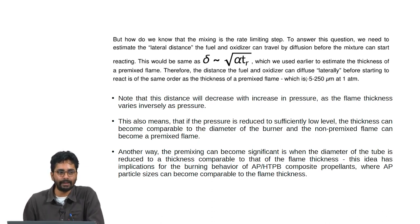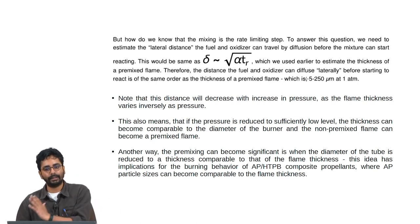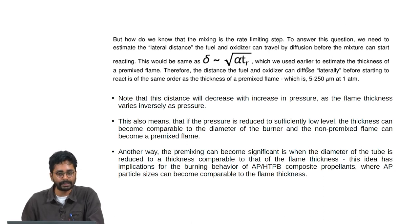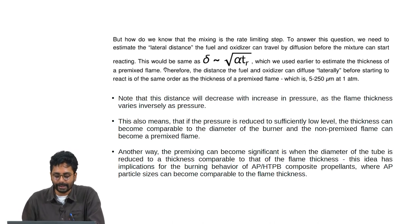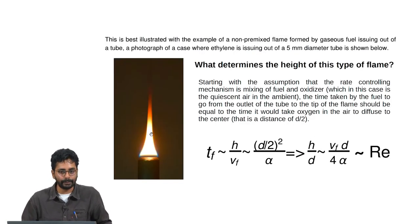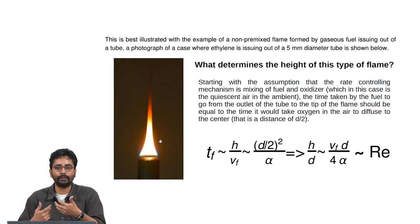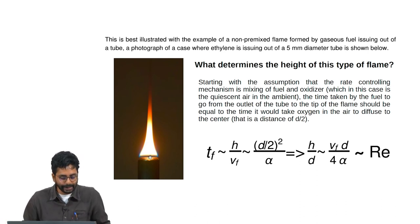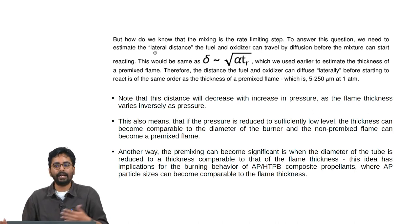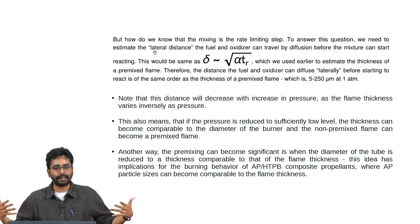We can pose a general question: for a given condition, is the flame controlled only by mixing, or will chemical reaction effects come into play? To answer this, we need to estimate the lateral distance the fuel and oxidizer can travel by diffusion before the mixture can start reacting. The fuel is issuing from the center, oxidizer diffusing in from outside — the question is how much lateral distance the fuel and oxidizer can travel by diffusion before the mixture starts reacting.